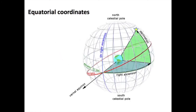The intersection between the equator and the ecliptic defines two points: the equinoxes. There is the vernal equinox and the autumn equinox. The origin of right ascension is the vernal equinox by definition.